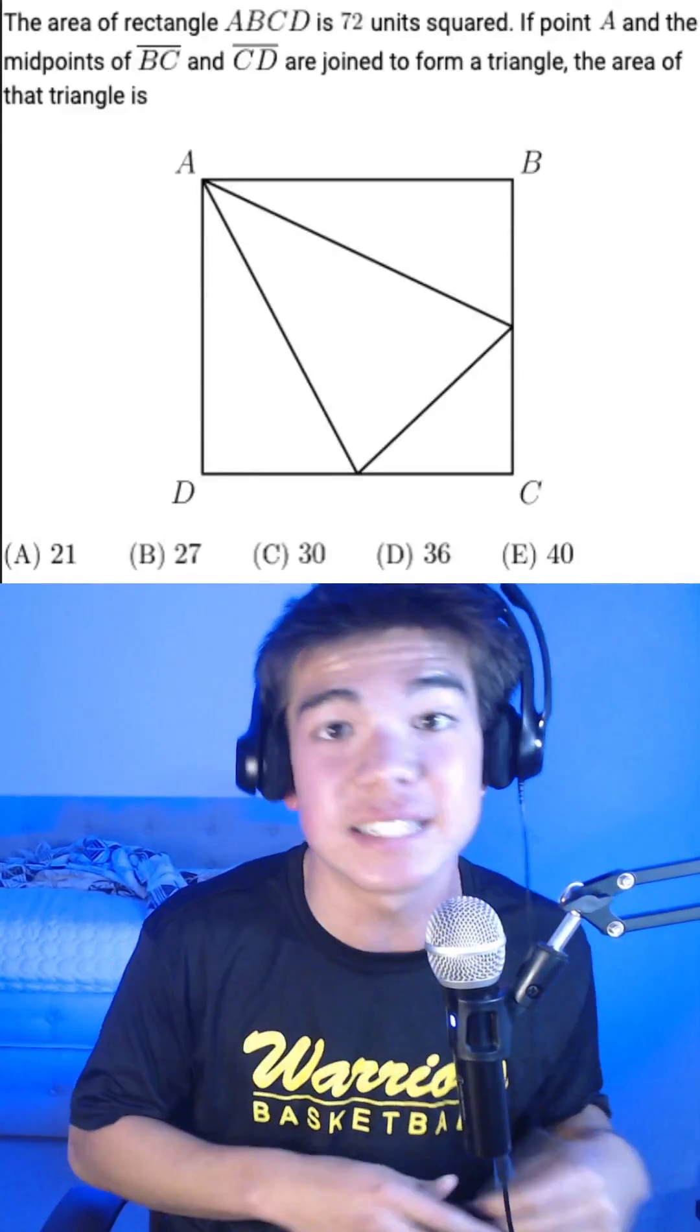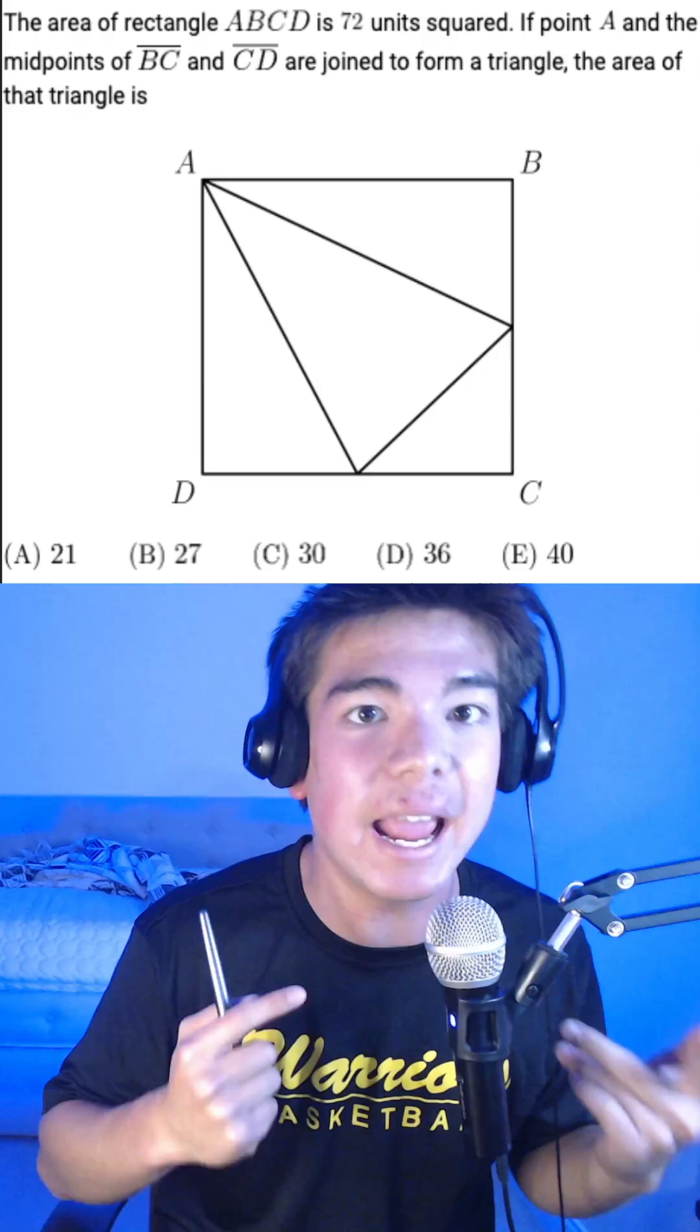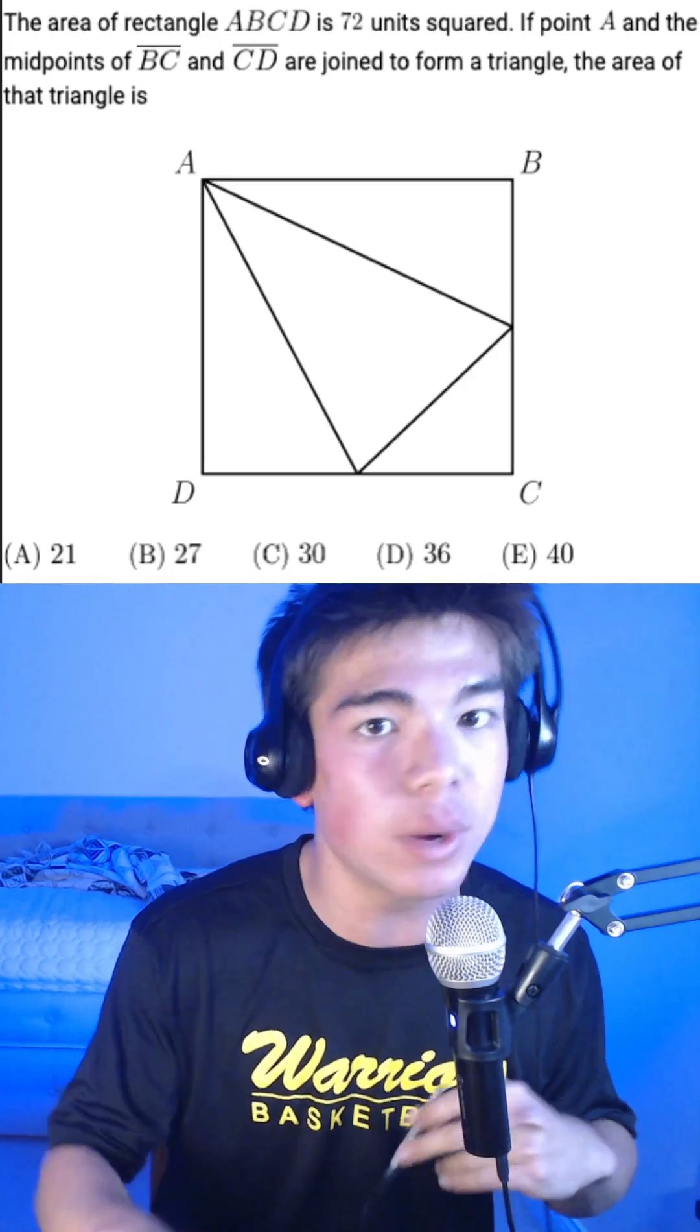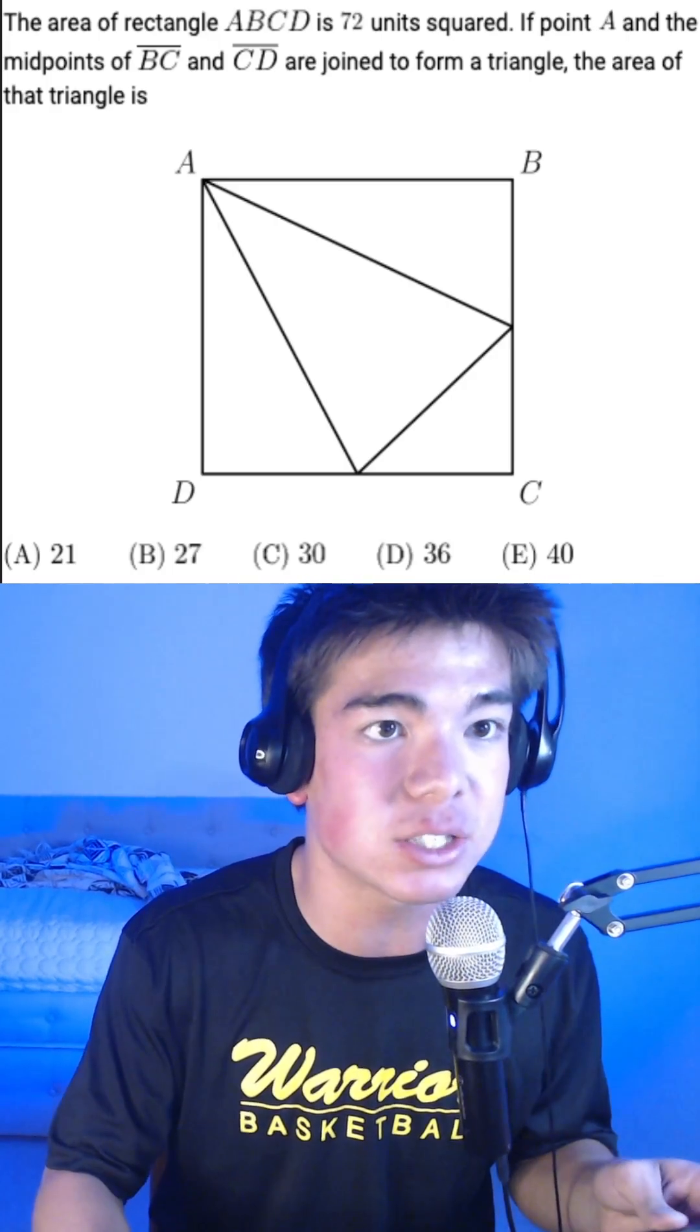The area of rectangle ABCD is 72 units squared. If point A and the midpoints of BC and CD are joined to form a triangle, the area of that triangle is 21, 27, 30, 36, or 40.